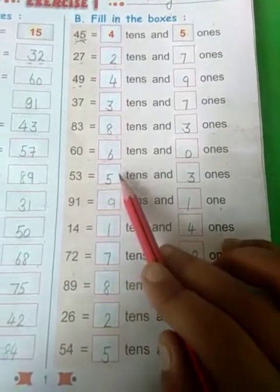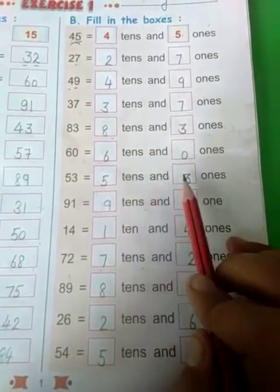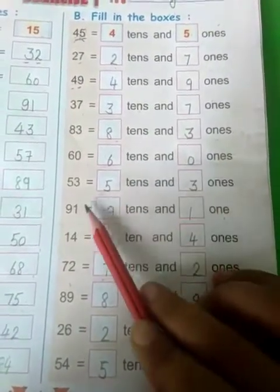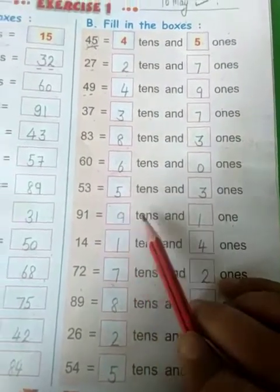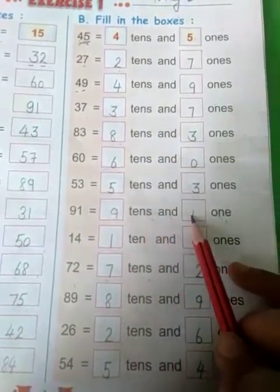53 is there. 5 tens and 3 ones. 91, 9 tens and 1 one.